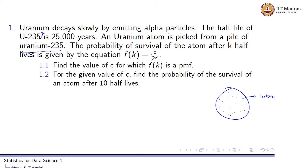First of all, if you look at this question, they are saying that the half-life of U-235 is 25,000 years. The first question would be: what is half-life? Half-life is the time taken for half of uranium's atoms to decay. That means the number of uranium atoms will be reduced to half after this half-life of 25,000 years. Suppose there were n atoms of uranium initially, at time t = 0.